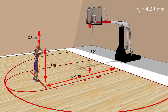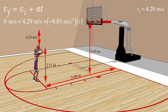Now that we know the initial velocity in the y direction, we can find the time it takes for the ball to reach the top of its trajectory using the first equation. We can plug in the values we know to find what we're looking for. After solving, we know that time equals 0.44 seconds.